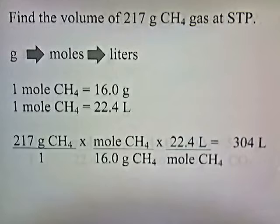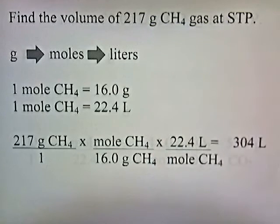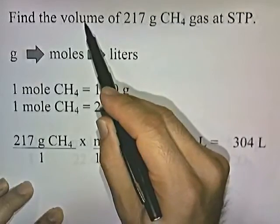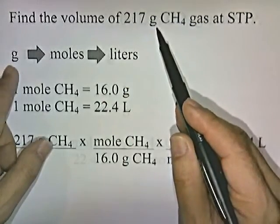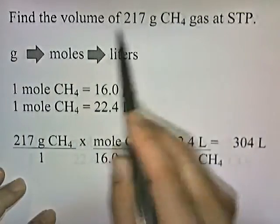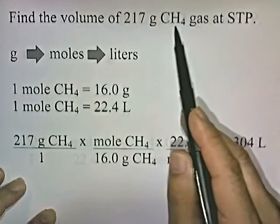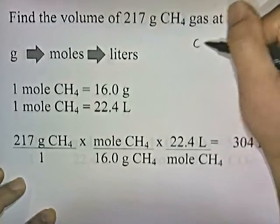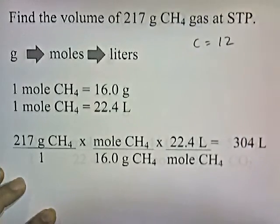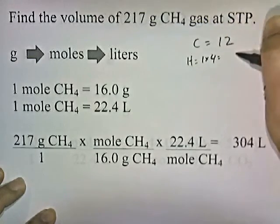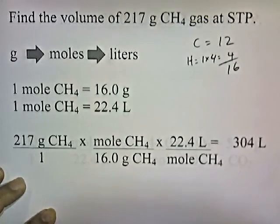Problem 2: Find the volume of 217 grams of CH4 gas — that's methane — at standard temperature and pressure. This one has an extra step: they give us grams and we want to convert to liters, so we go from grams to moles to liters. To convert grams to moles, we need to know how much one mole of CH4 weighs. Carbon has a mass of 12 grams and hydrogen has a mass of 1 gram, and there are 4 of them, so that gives us 16 grams per mole.